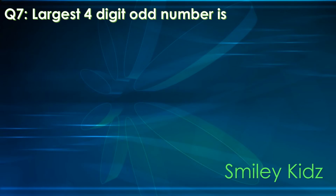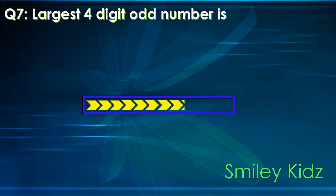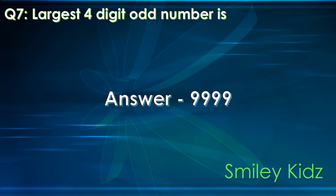Question number 7. What is the largest 4-digit odd number? Your time starts now. The correct answer is 9,999. The largest 4-digit odd number is 9,999.